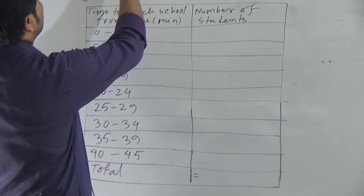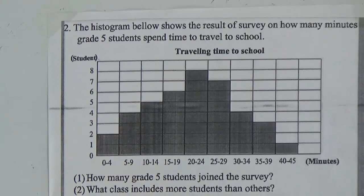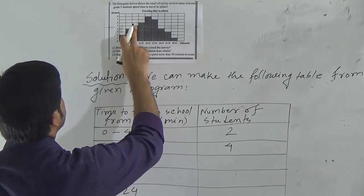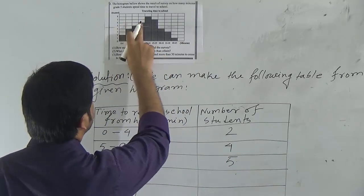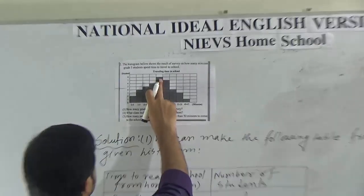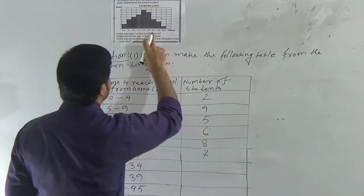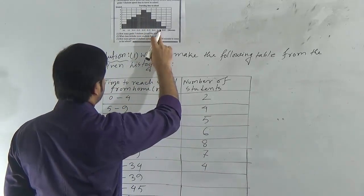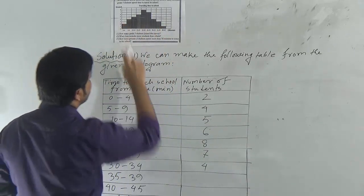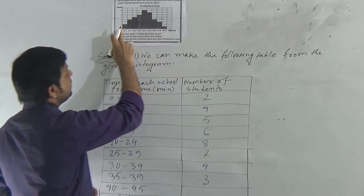In the first class 0 to 4, we write 2. Class 5 to 9: 4. Class 10 to 14: 5. Class 15 to 19: 6. Class 20 to 24: 8. Class 25 to 29: 7. Class 30 to 34: 4. Class 35 to 39: 3. Last class 40 to 45: 1.